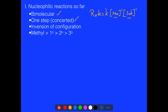SN2 is a one-step reaction. It has two arrows, but it occurs all in one step, so we say it's concerted — it happens together. Also, when we saw that there was a reaction with an R configuration, it always converted into S, so we always got inversion of configuration.